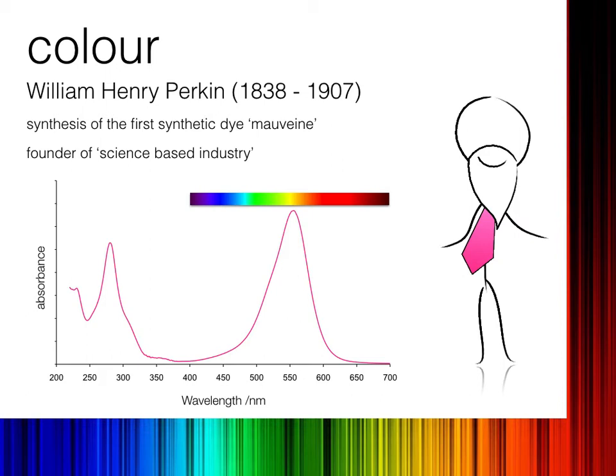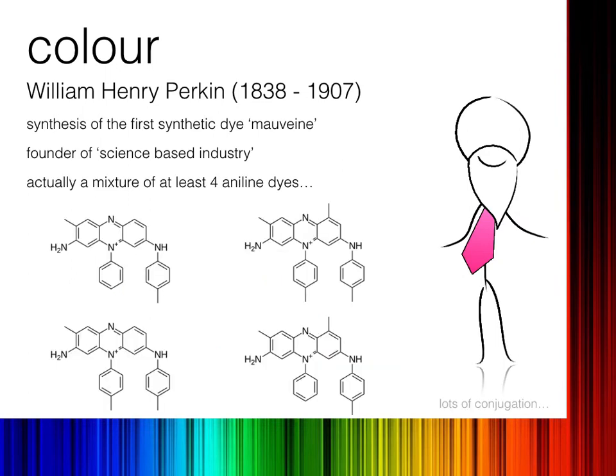Mauveine, when we look at it nowadays, isn't quite so simple as a single molecule. In fact it is a mixture of four aniline dyes, all very similar with just small differences between them. However, this doesn't make Perkin's accomplishment any less great. We can see with these dyes that there is a large amount of conjugation — lots of single-bond double-bond patterns — and there are heteroatoms as well, giving the n-to-pi-star transition that helps the absorption appear in the visible part of the spectrum.